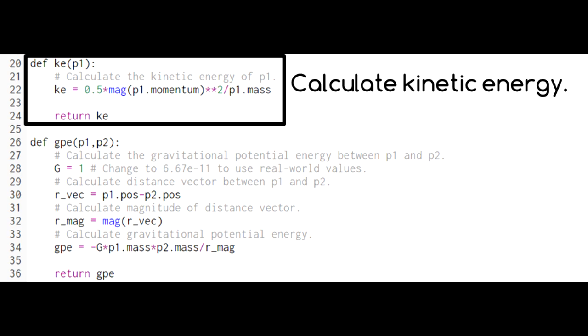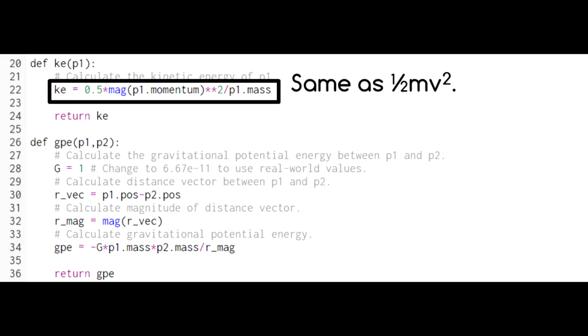This function calculates the kinetic energy of an object. The equation we see here is equivalent to the traditional one-half mv squared, but uses momentum instead of velocity.